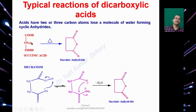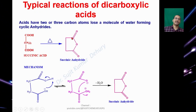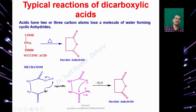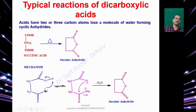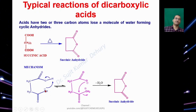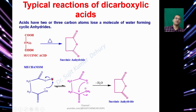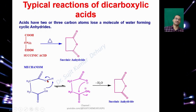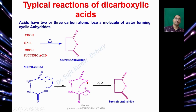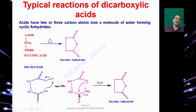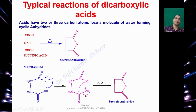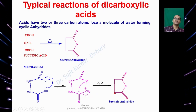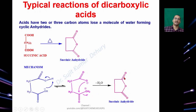Similarly, Succinic Acid upon heating gives Succinic Anhydride. Here the OH has a lone pair of electrons which acts as a nucleophile. It takes the proton of another hydroxyl group, the O–H bond breaks on oxygen, and this O⁻ attacks the carbonyl carbon, kicking out water as a neutral molecule to give Succinic Anhydride.